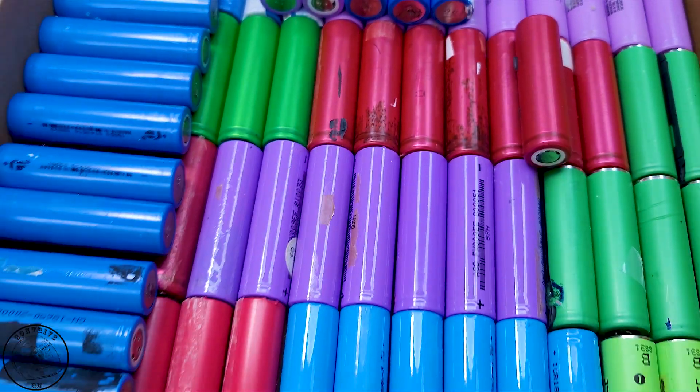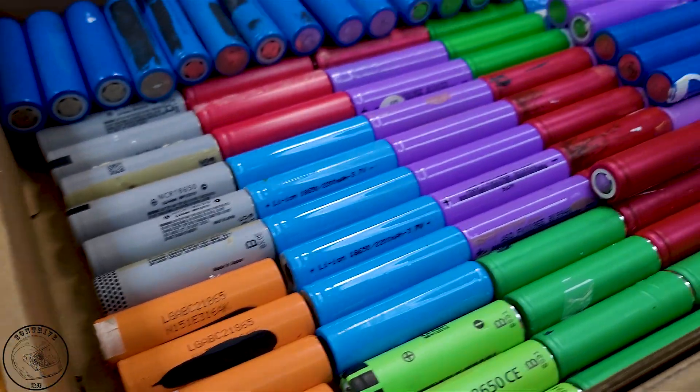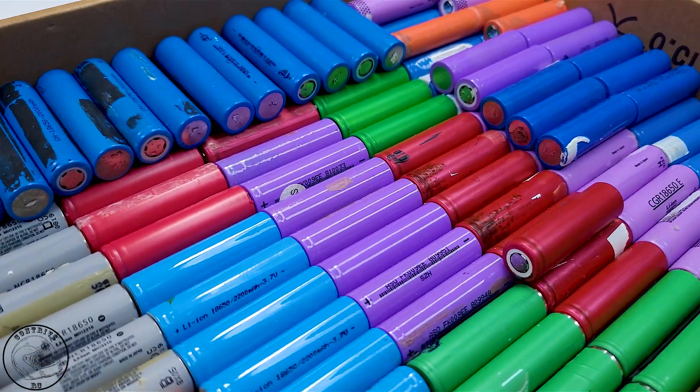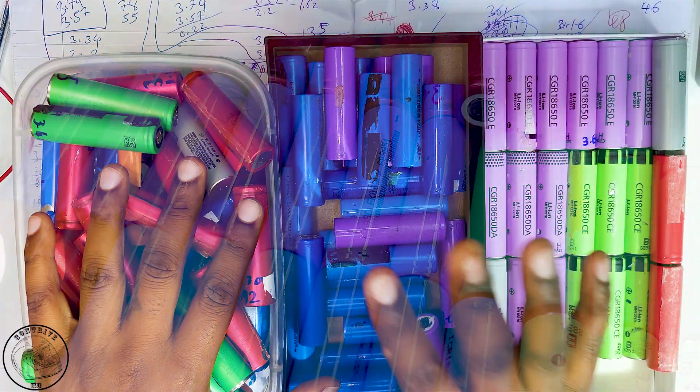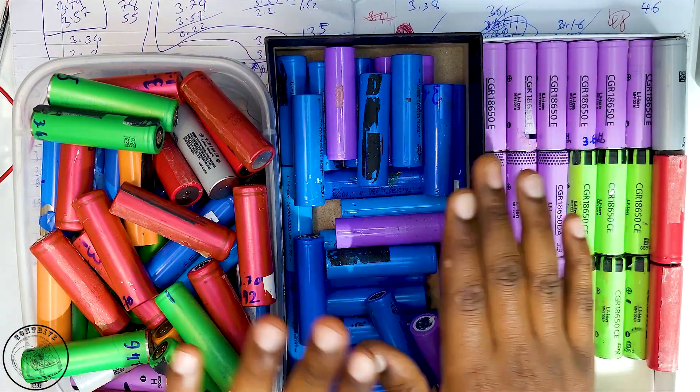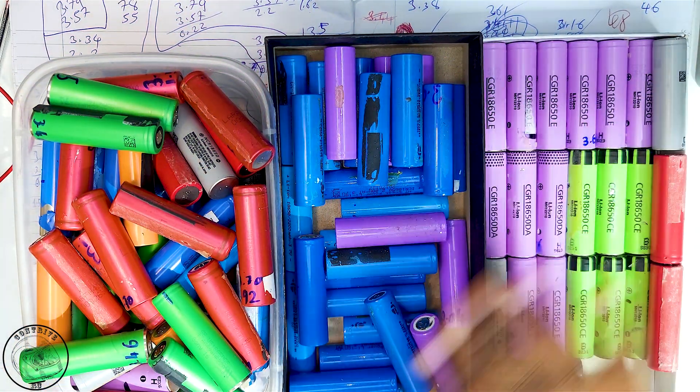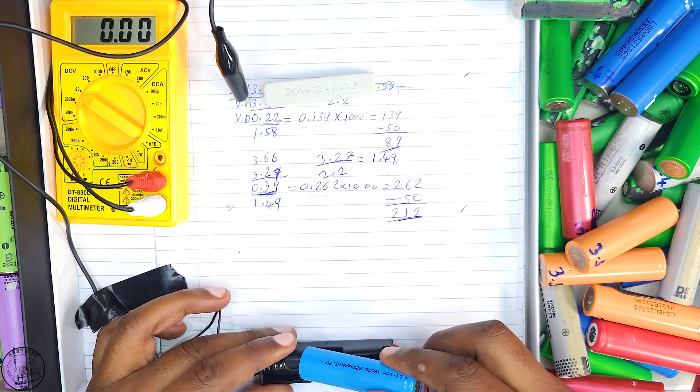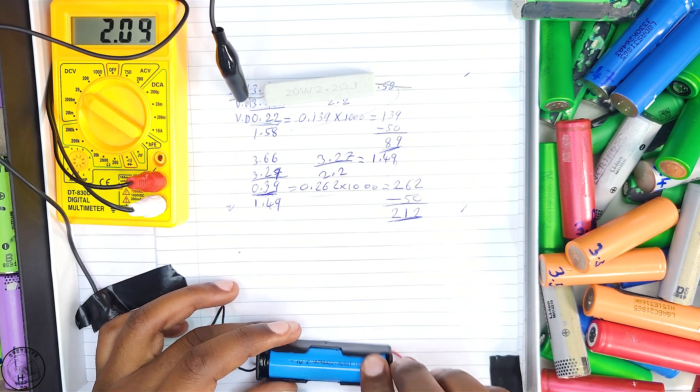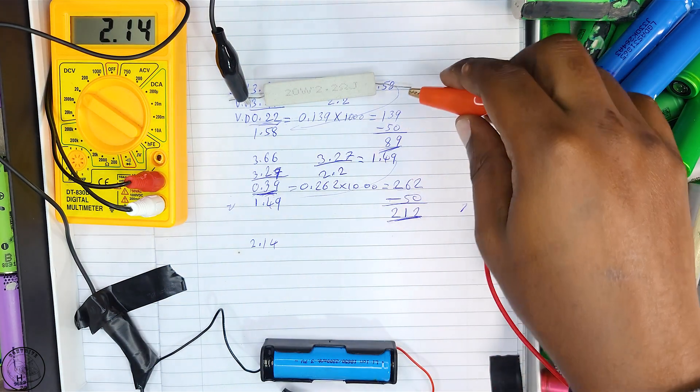In part 1, we began with over 120 lithium-ion cells but narrowed down to 80 through careful selection. Today we'll continue this analysis starting from those remaining 80 cells.